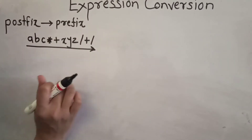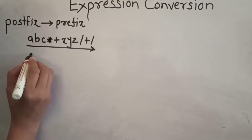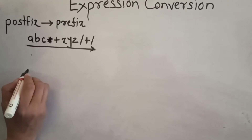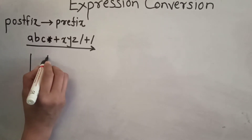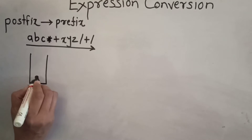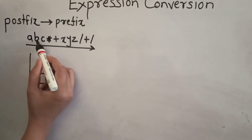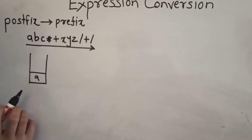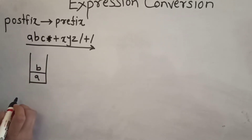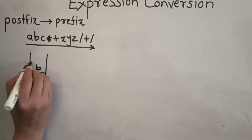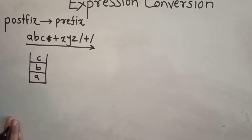Let's solve an example. The first character is A — it is an operand, so push it onto the stack. The next character is B — again an operand, so push it onto the stack. The next character is C — again an operand, so push it onto the stack.